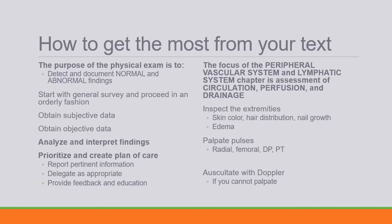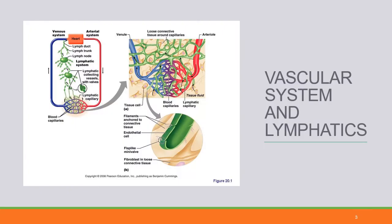You should know how to inspect the extremities, identifying normal versus abnormal skin color, hair distribution, nail growth, and edema. Palpate pulses in the radial, popliteal, femoral, and pedal regions, and use a Doppler if you cannot palpate. Review the anatomy and physiology for the vascular system and the lymphatics, focusing on how they are connected and interrelated in terms of fluid balance and circulation control.